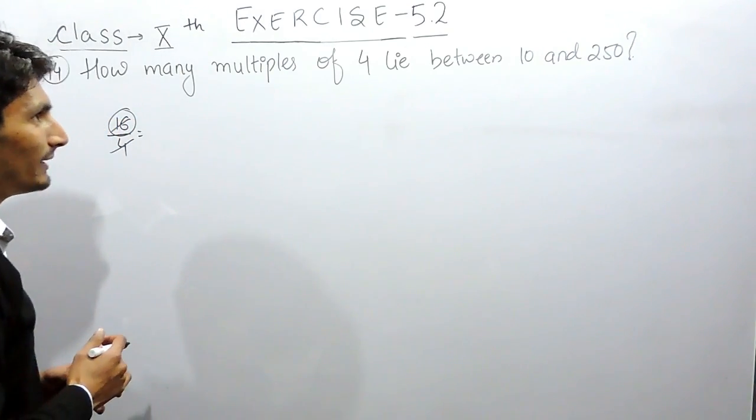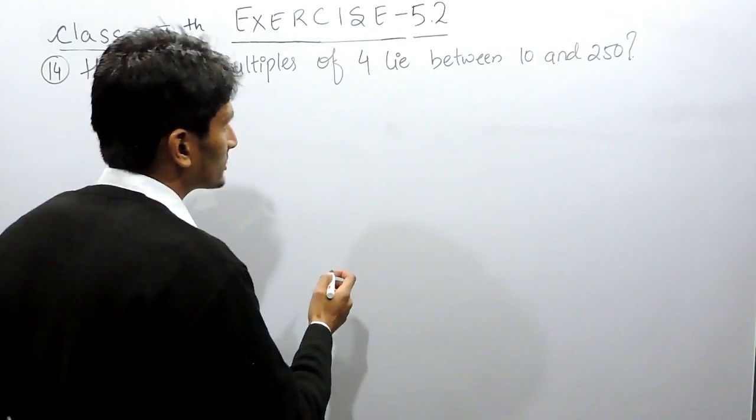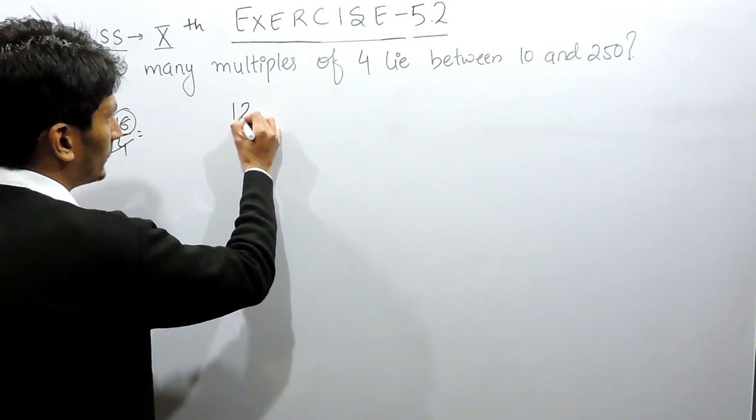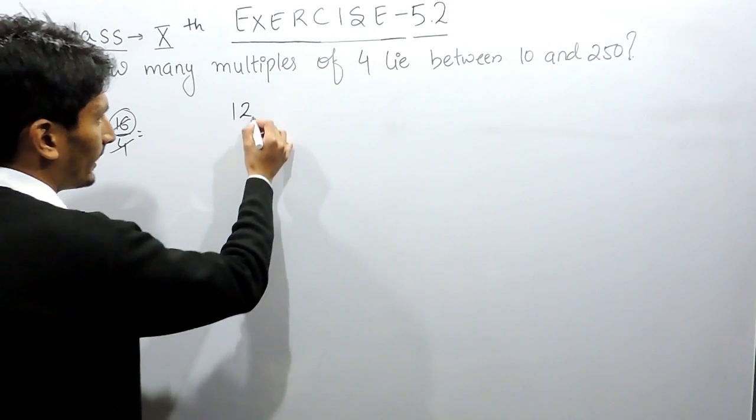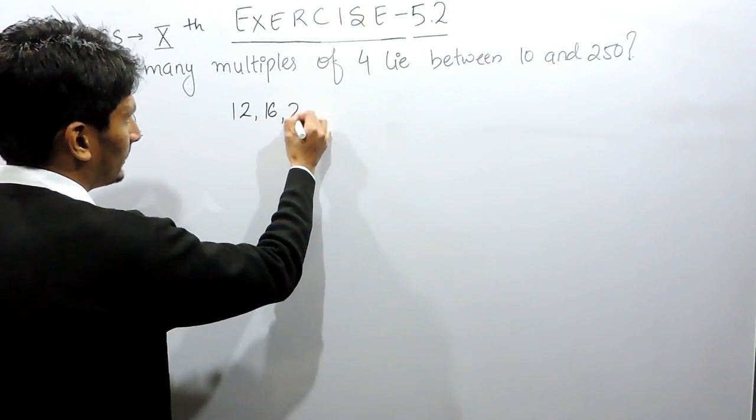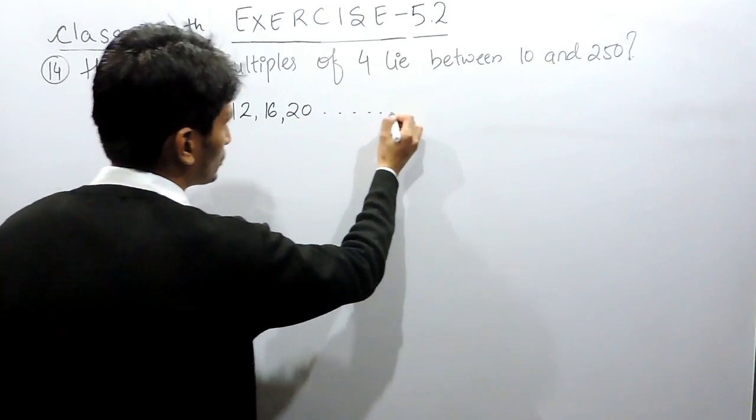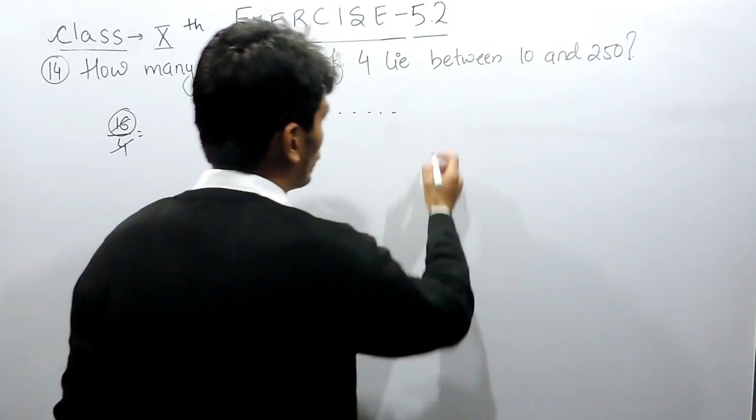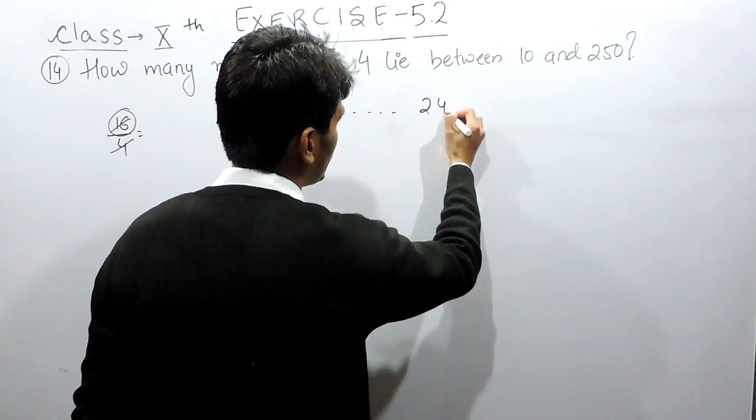First of all, let's make the series. The first number between 10 and 250 which is divisible by 4 is 12. And after that 16 and 20 and so on. And the last number which is divisible by 4 should be 248.